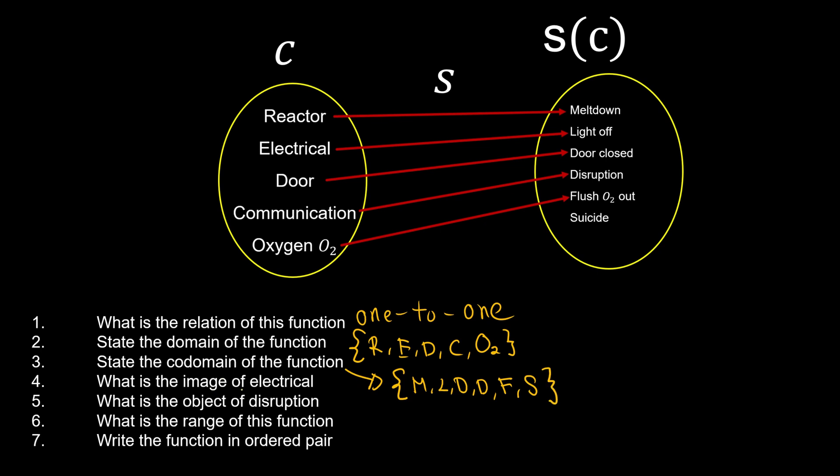How about the image of the electrical? So we go to electrical and see what is the image. The electrical, what is the image? Hey, we have light off. So the answer for this one is light off. What is the object of disruption? So we go to disruption and find back what is the object and we know this is going to be the communication.